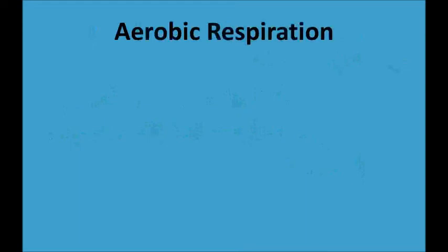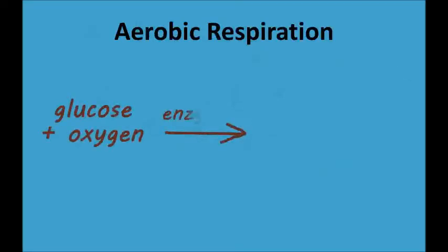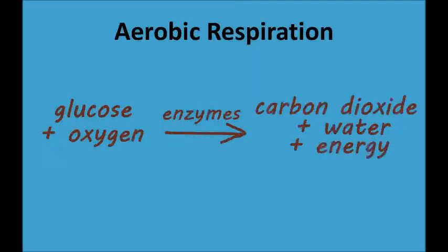I'm going to start by explaining aerobic respiration since it's a little bit simpler. The word equation for aerobic respiration is: glucose plus oxygen, using enzymes, results in carbon dioxide plus water plus energy. We can't live without food or oxygen, and we can easily see why from this equation — oxygen and food in the form of glucose are the two ingredients in aerobic respiration. We can also see from this equation why our breath contains moisture and carbon dioxide, since both water and CO2 are by-products of aerobic respiration.